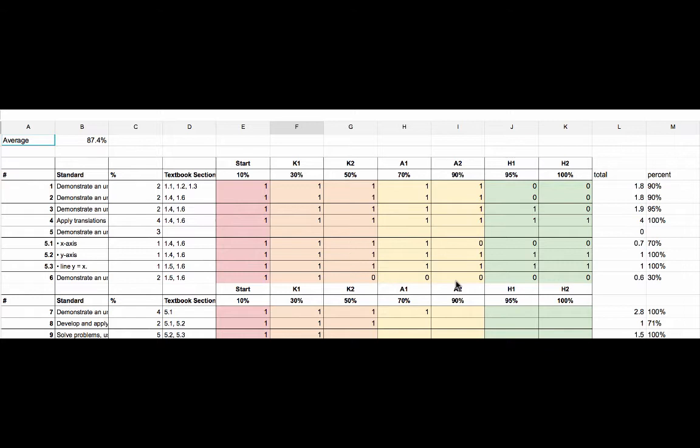One other great thing about the way I've implemented standards-based grading is if a student can show me an application question, it presupposes that they understand the knowledge level question. So if a student can answer a higher-level thinking question, I give them credit for an application question and a knowledge question, and you can see that the mark moves up quite quickly. The overall mark is then generated and reported to the student instantaneously using this system.